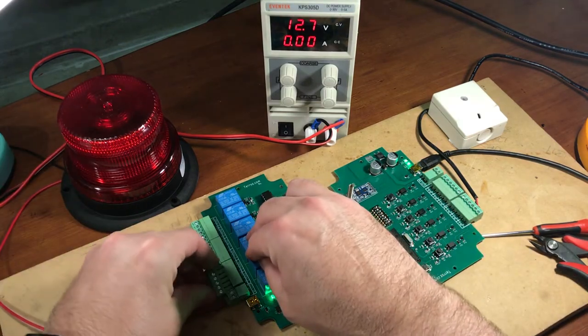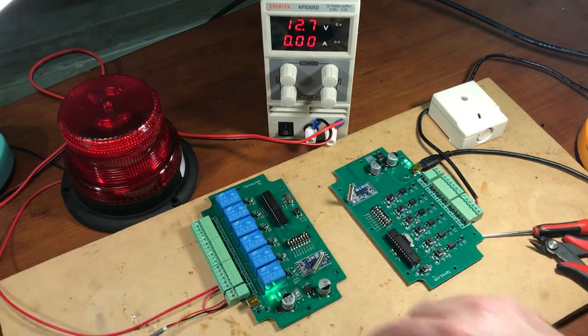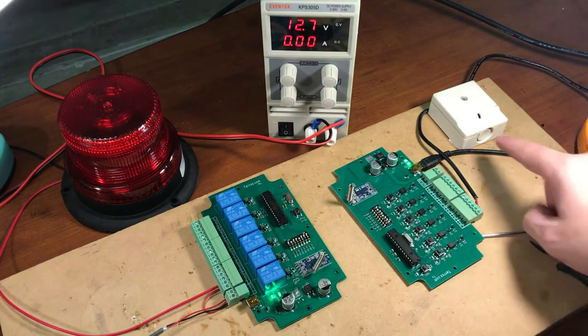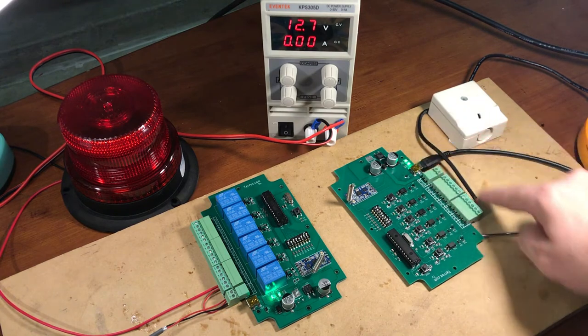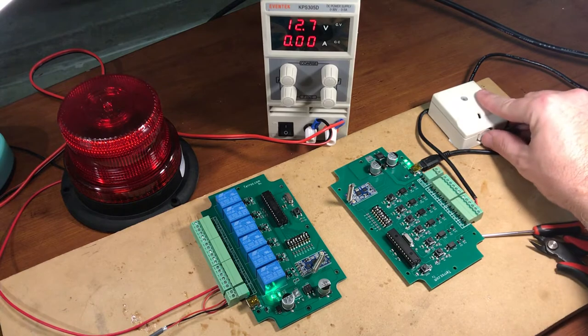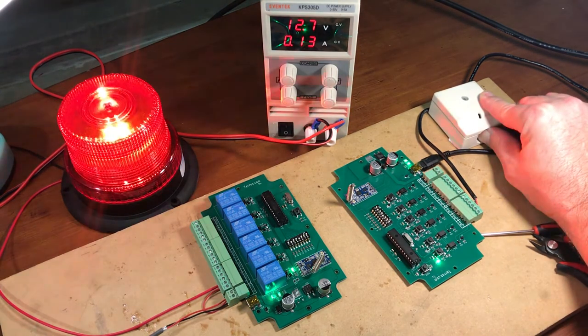I'm just going to go ahead and plug this in. Strobe into the relay system, six channel relay. We're on channel number one and I have that panic switch connected to channel one. Now it's not going until I press the button here and there it goes.